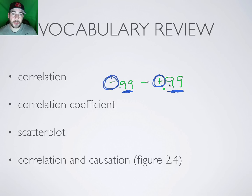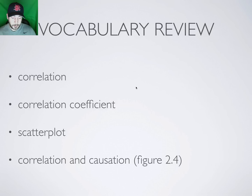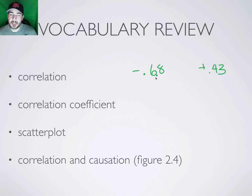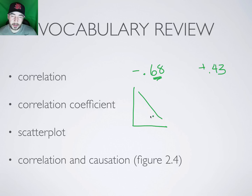A common mistake is thinking that negative is less strong than positive. Look at the number first — that tells you how strong. Then look at the sign, which tells you which direction it's going. For instance, negative 0.68 is a stronger correlation than positive 0.43. The negative sign means the graph goes down in that direction — a negative or inverse correlation — while positive goes up, indicating a positive or direct correlation.